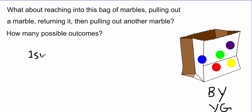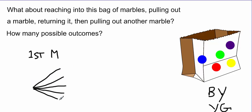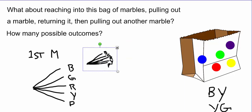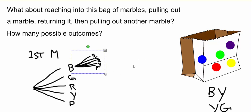When pulling out the first marble, how many possibilities are there? Five. Therefore our tree starts with five branches — blue, green, red, yellow, and purple. That's the first level of our tree, representing the first simple event. Then for the second marble: since we put the first marble back in the bag, there are also five possibilities — blue, green, red, yellow, and purple. We take that second level and put it at the end of each outcome from the first level.